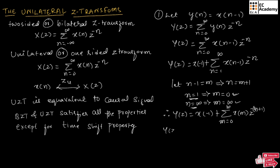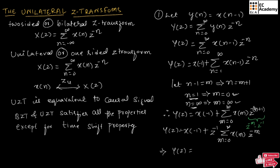So, we can write Y of Z is equal to X of minus 1 plus, for the Z term, we can write Z to the power of minus m into Z to the power of minus 1. So we can take Z to the power of minus 1 outside the summation and write Z to the power of minus 1, summation of m is equal to 0 to infinity, X of m, Z to the power of minus m. So we can write Y of Z is equal to X of minus 1 plus Z to the power of minus 1 into X of Z.